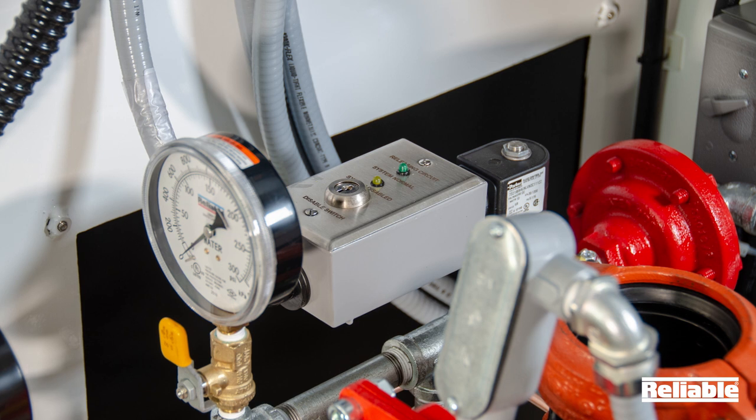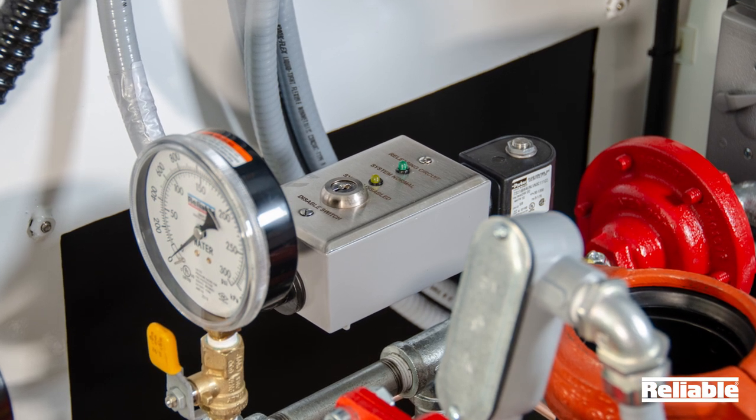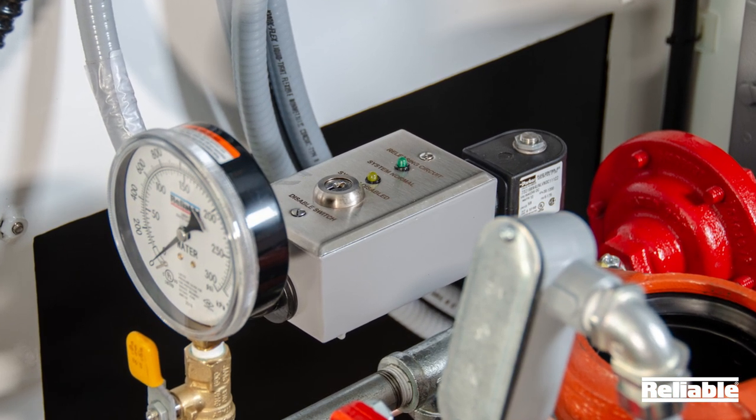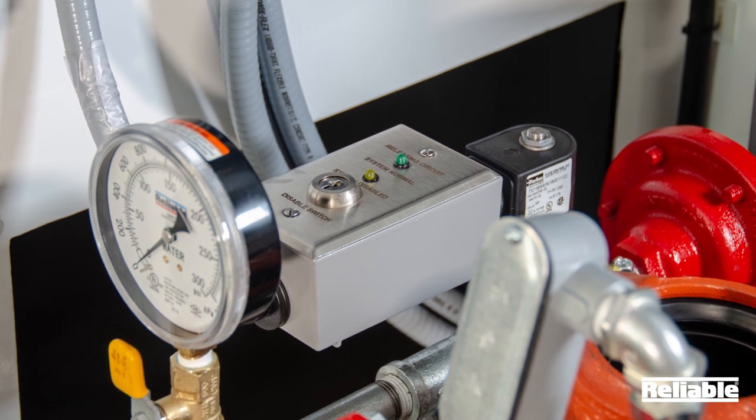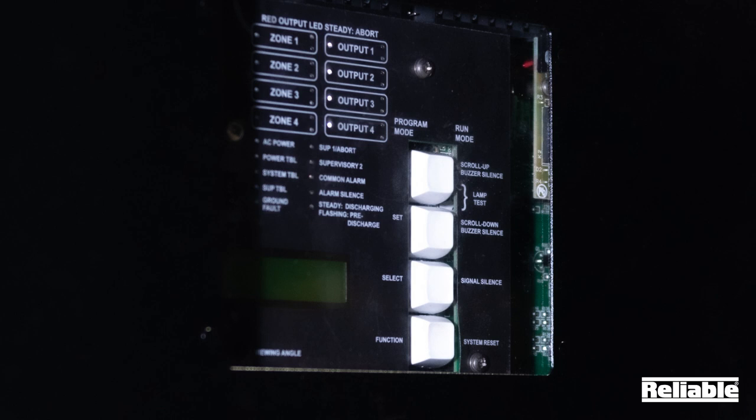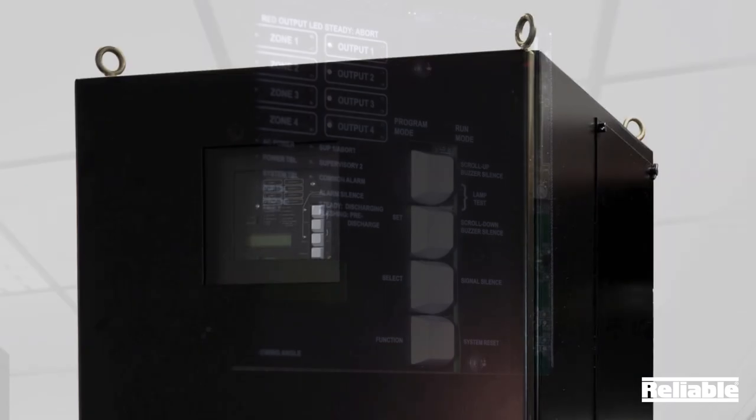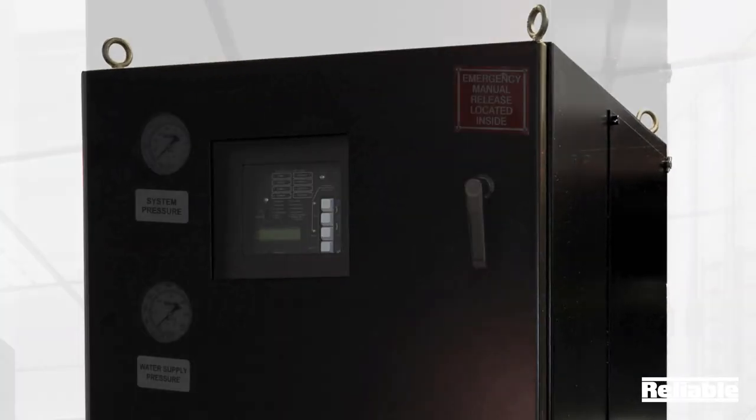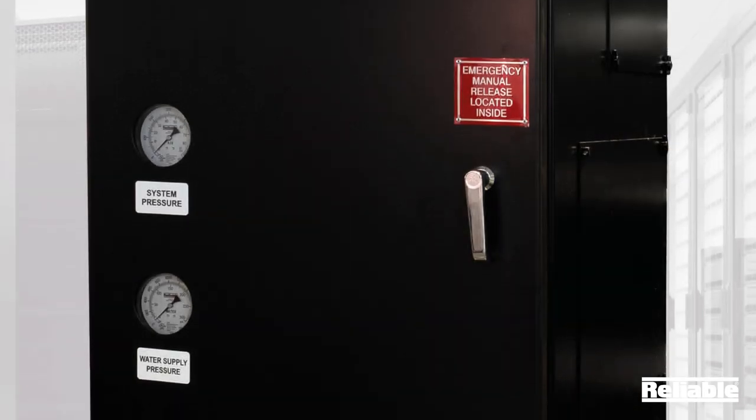All electric release systems also feature a release circuit disable switch which allows supervised disconnection of the solenoid during system inspection, testing, and maintenance. The release panel and system pressure gauges are enclosed behind and visible through the prepack cabinet door.